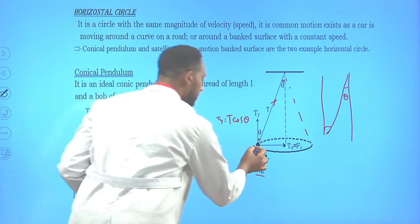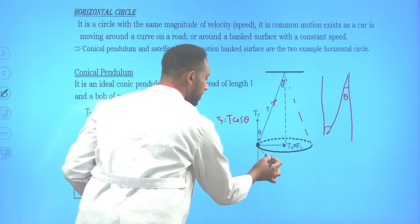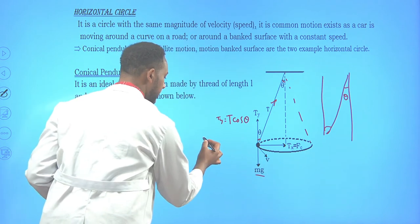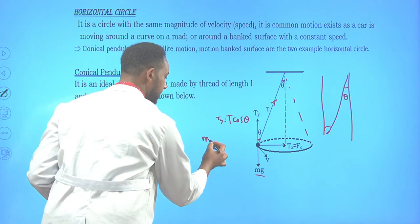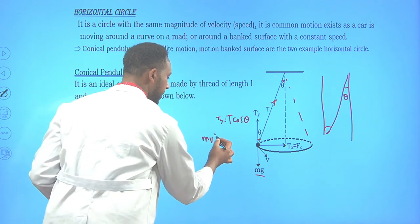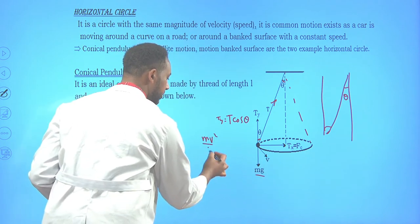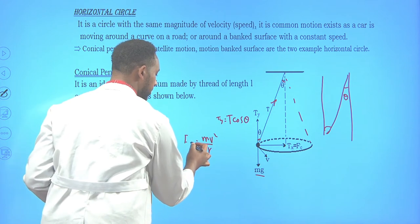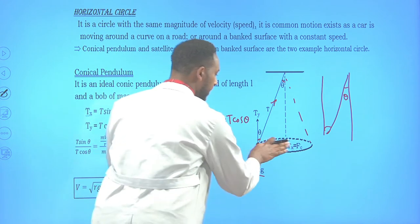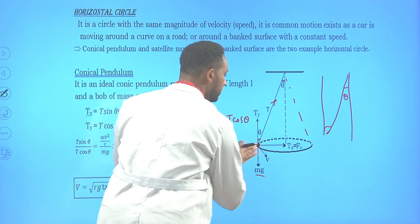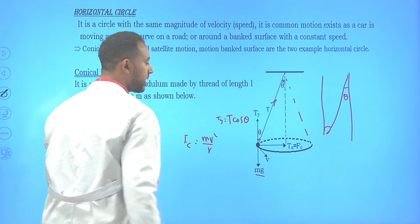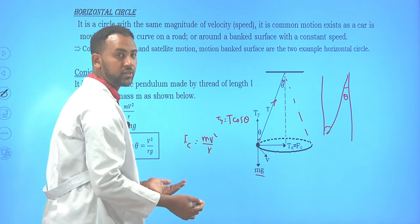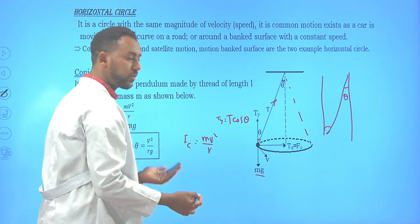The object has a tangential velocity, so it experiences a centripetal force equal to mv²/R. The force acting towards the center is the centripetal force, which equals the horizontal component of the tension.